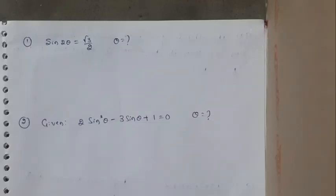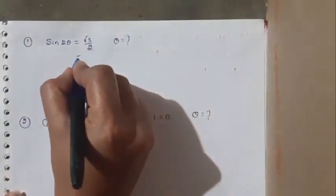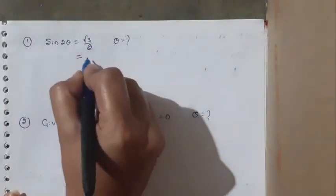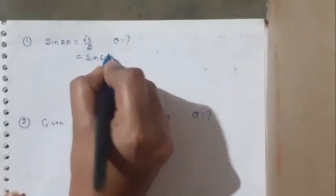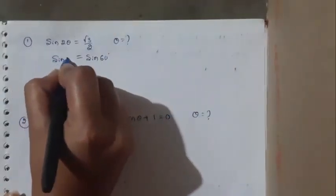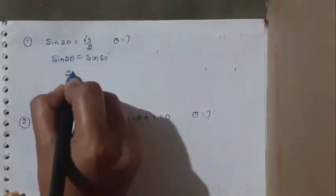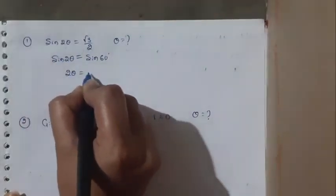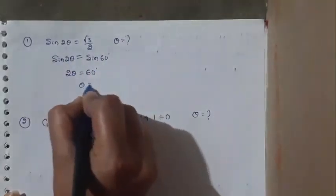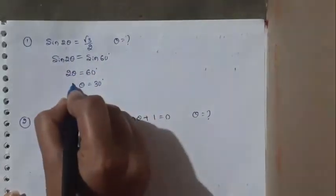First problem: sin 2θ is equal to √3 divided by 2. We need to find theta. From the sin table, √3/2 is equal to sin 60°. So sin 60° = sin 2θ, which implies 2θ = 60°, therefore theta = 30°.